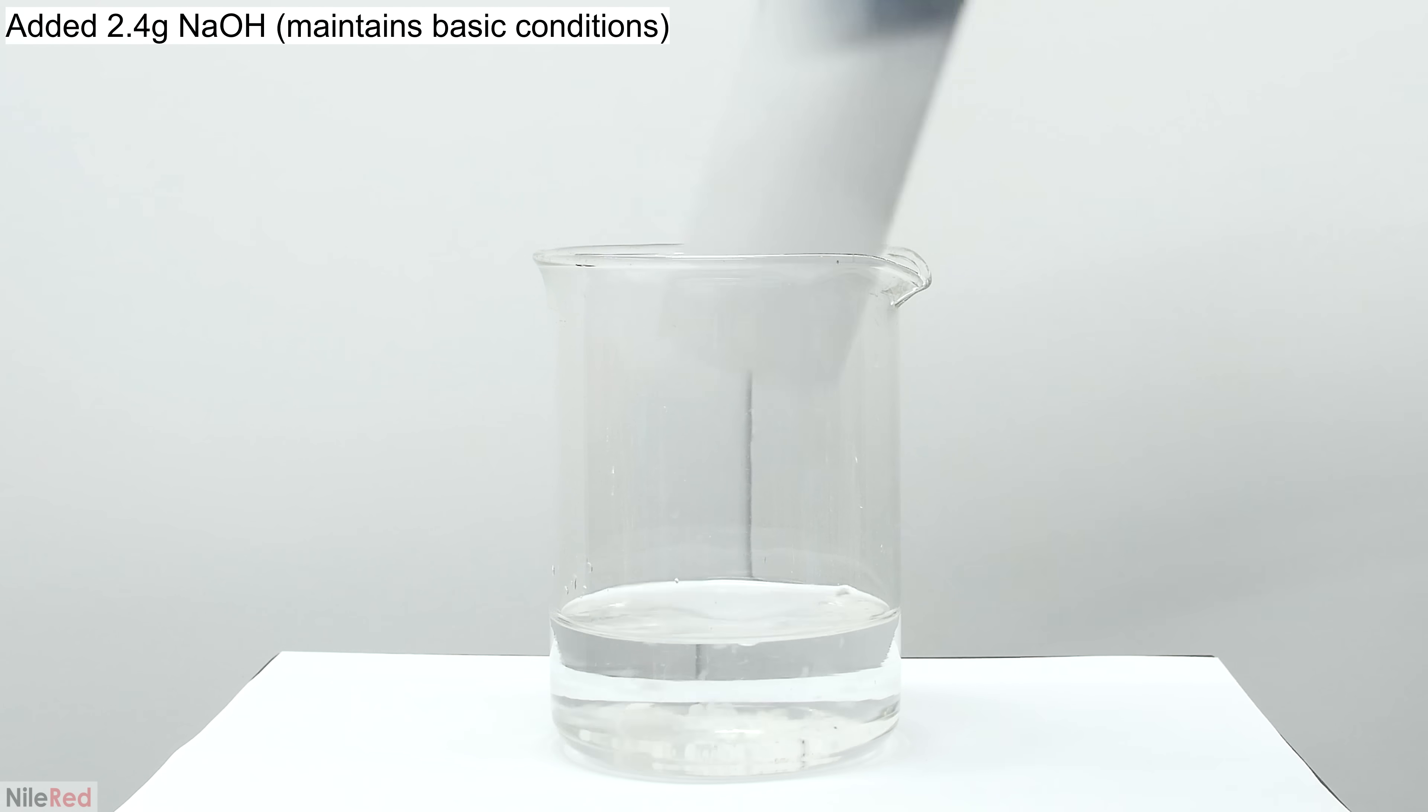Once we have a crystal clear solution again, I go ahead and dump in about 2.4 grams of sodium hydroxide. Some of the sodium hydroxide will react with the silver nitrate to form more silver oxide. But since we have an excess of ammonia present, just like before, the silver oxide will form a complex and dissolve into solution.